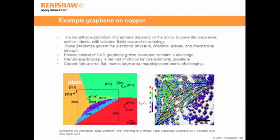Characterization of graphene is primarily done with Raman spectroscopy because it gives you so much information about the material. Unfortunately copper falls off flat, and this makes large area mapping experiments quite difficult. I've got two images here showing some work that was published in 2013.